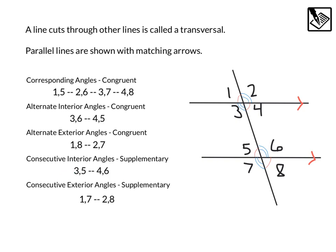Consecutive, or the same side, interior angles, are supplementary. So 3 and 5 would add to 180, and 4 and 6 would also add to 180.